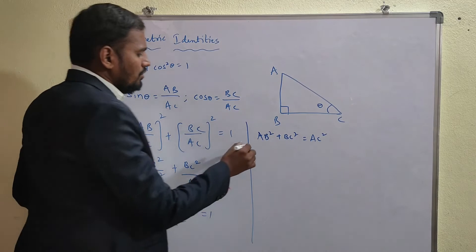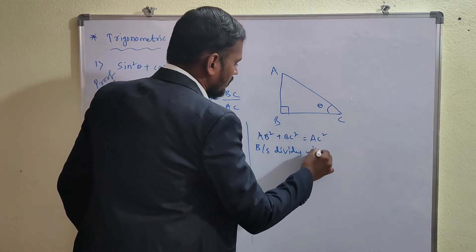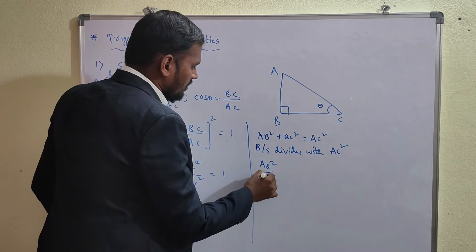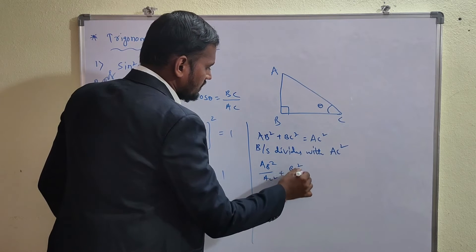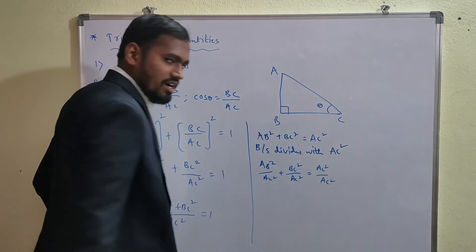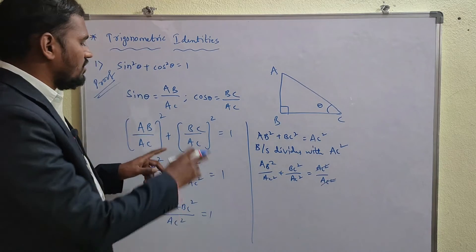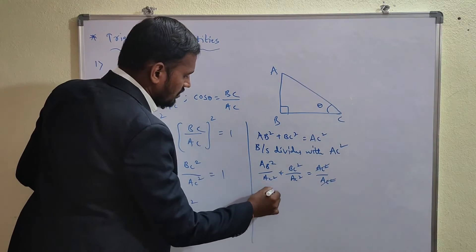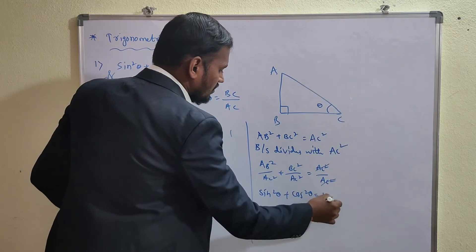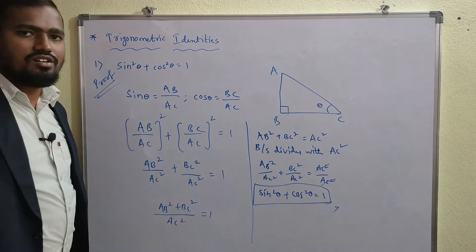Transposing AC² to the RHS: AB² + BC² = AC². Dividing both sides by AC²: AB²/AC² + BC²/AC² = 1. Since AB/AC = sin θ and BC/AC = cos θ, we get sin²θ + cos²θ = 1. This completes the proof.